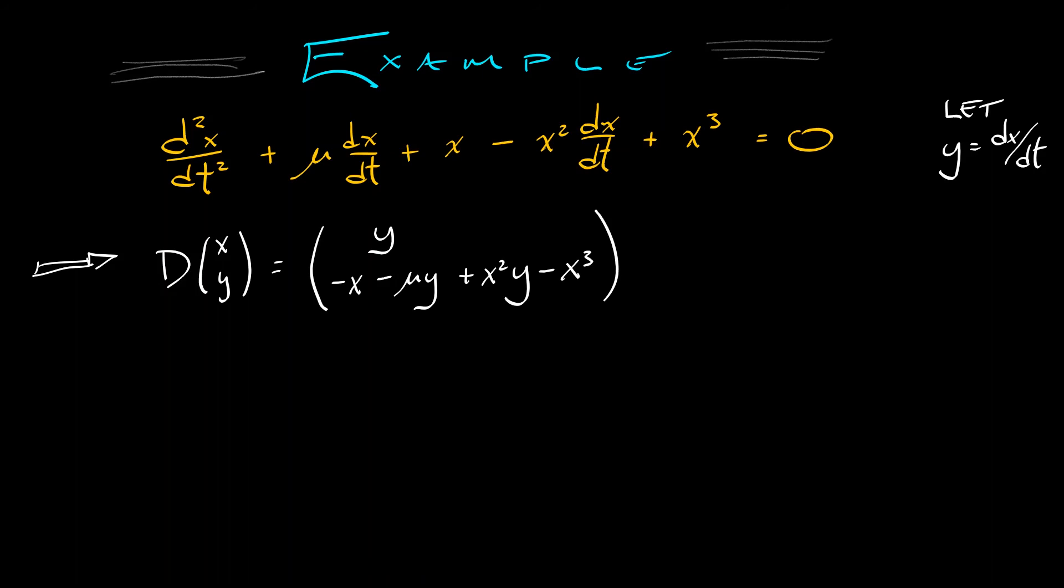If I rip out the linear portion, then at the bifurcation point, everything is great. My matrix is zero one, negative one, negative mu. And at the bifurcation point, mu is zero, so I have zero one, negative one zero. Cool. That works out great.